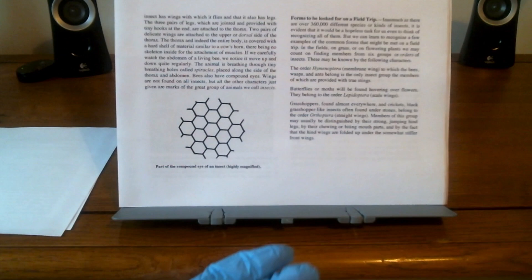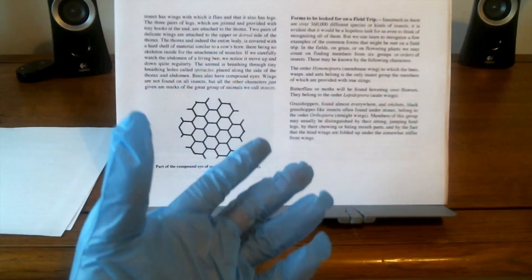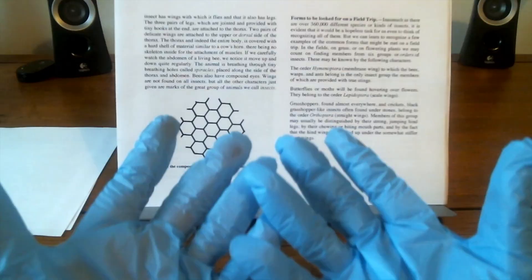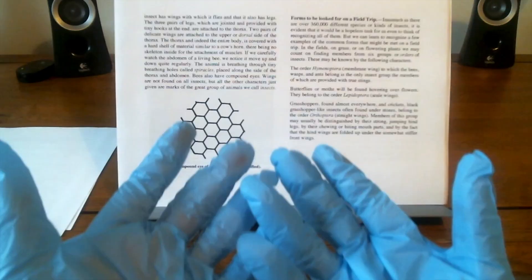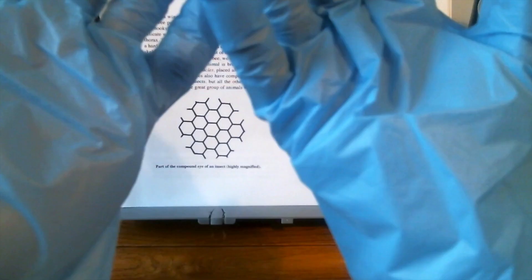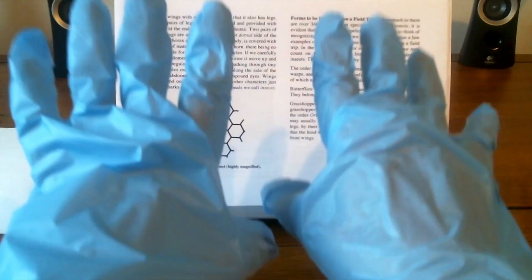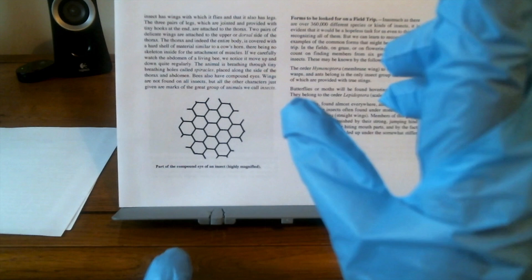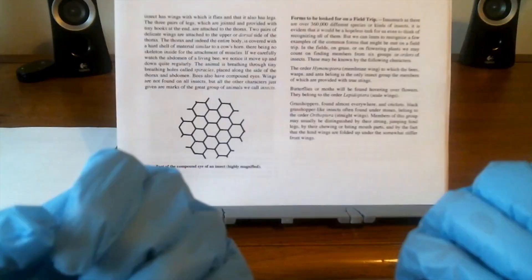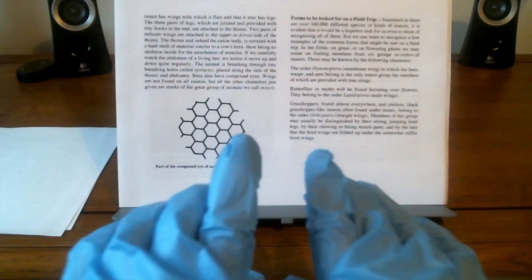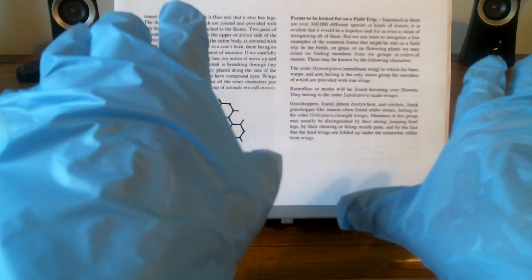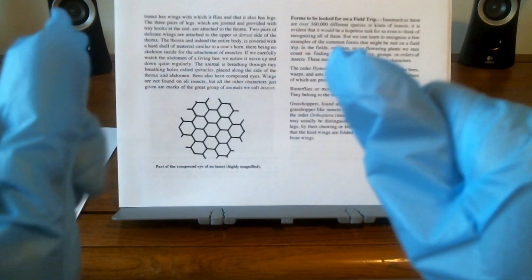Butterflies or moths will be found hovering over flowers. They belong to the order Lepidoptera, which means scale wings. Grasshoppers, which we can find almost anywhere this time of year, and also crickets, which are black, like grasshoppers, and can often be found under stones. They belong to the order Orthoptera, which means straight wings. Members of this group may usually be distinguished by their strong, jumping hind legs, and by their chewing or biting mouth parts, and by the fact that the wings are folded up and are somewhat stiffer from the front wings.